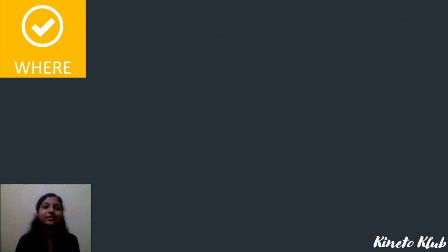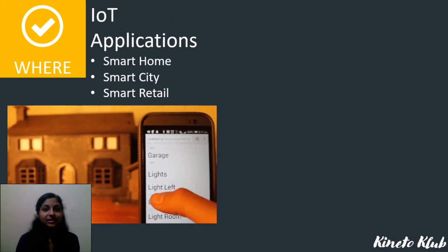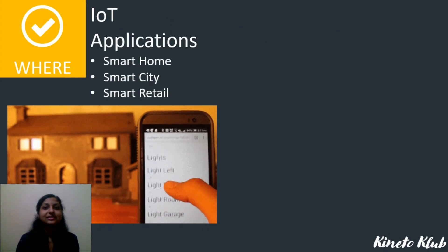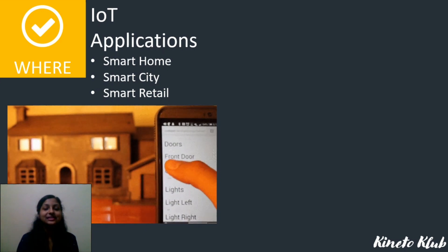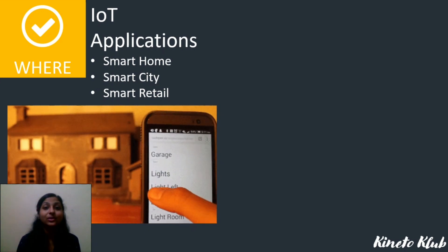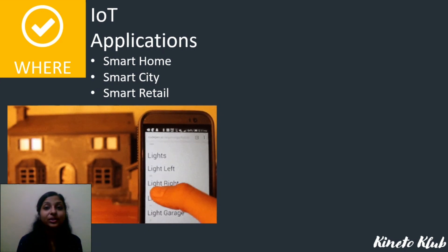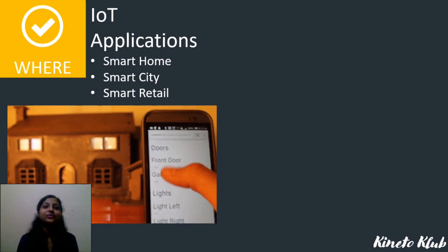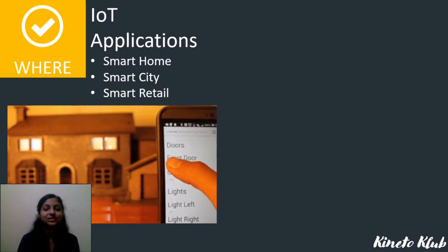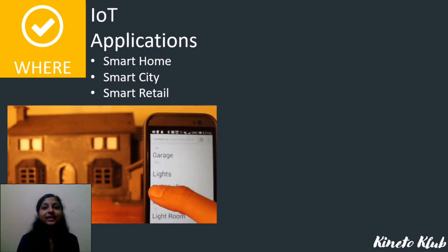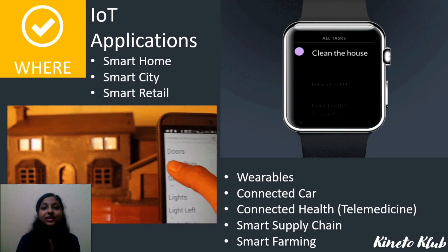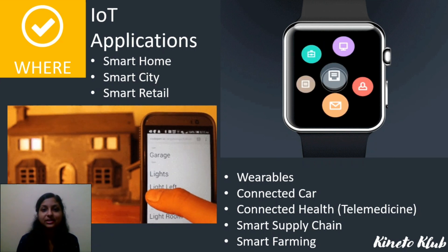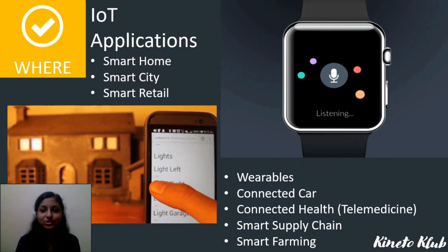Next is where — where is IoT found? Examples include smart cities, smart retail, and smart homes. In one example, clicking on the front door causes the light to switch on. Another example shows checking variables for tasks to perform.